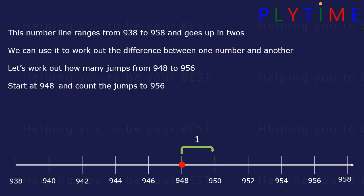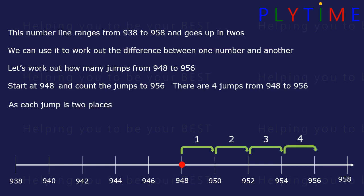1, 2, 3, 4. 4 jumps from 948 to 956. We know each jump is 2 numbers. So 4 jumps is 4 times 2, which is 8. The difference is 8.